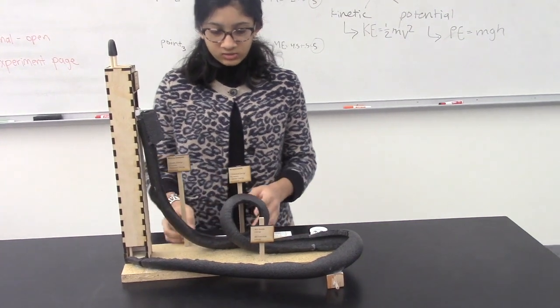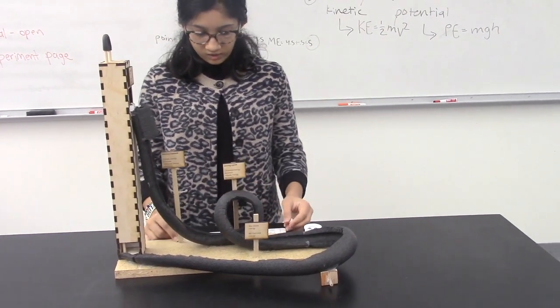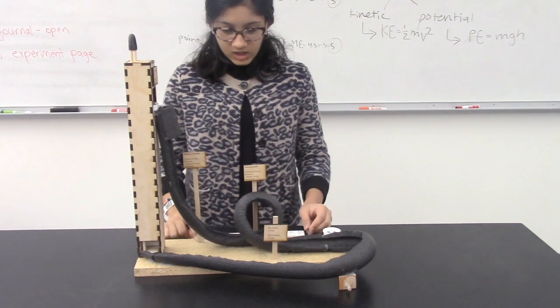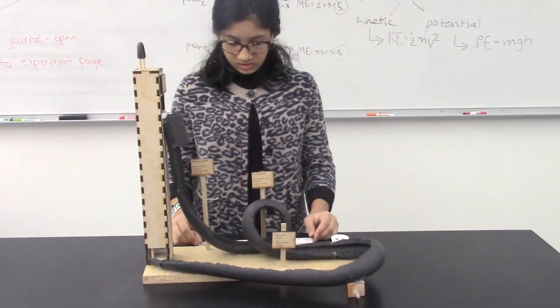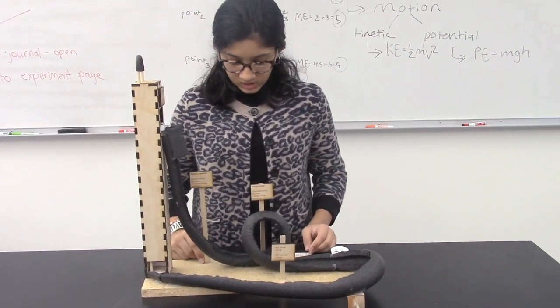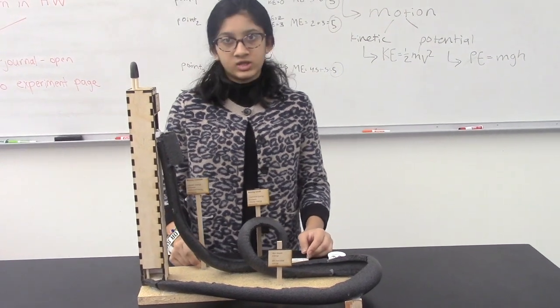We also have signs showing the various magnitudes of the kinetic and potential energy. They are placed in different sections around the roller coaster to show the measurements of energy. When the energy changes, there will be a sign to show this.